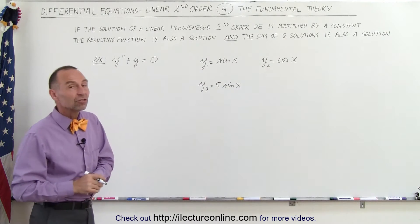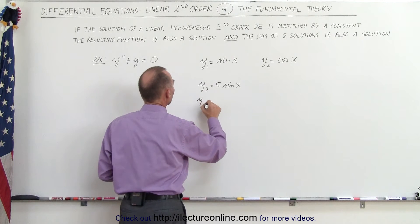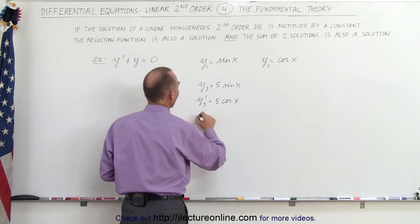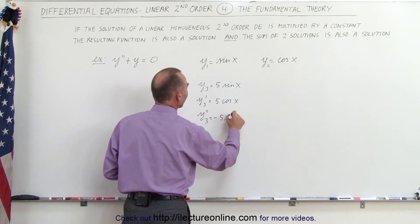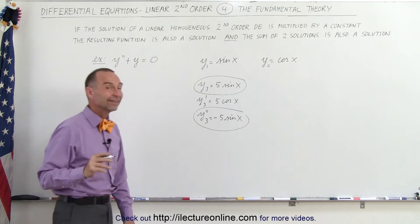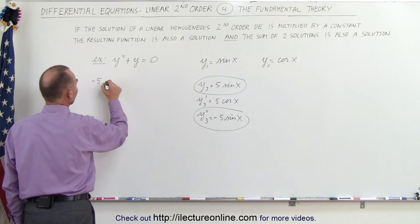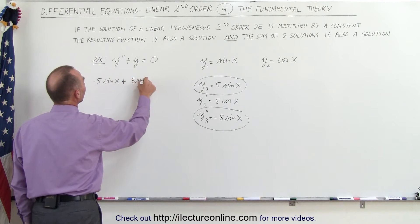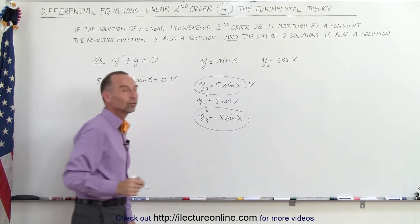Is Y3 a solution to the differential equation? According to the fundamental theory, it should be. Let's try it. Y3 prime equals five times the cosine of X, and Y3 double prime equals negative five times the sine of X. Plugging those into the original differential equation, we get Y double prime, which is minus five times the sine of X, plus Y, which is five times the sine of X, and sure enough that equals zero. So this is also a solution to the differential equation.